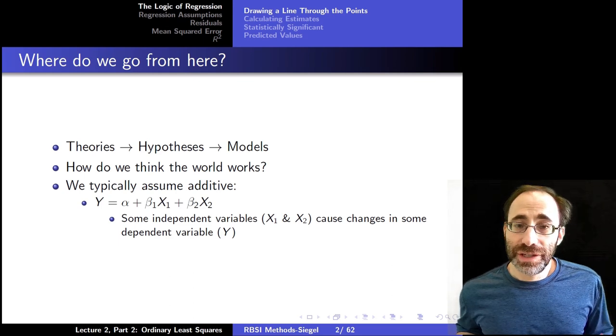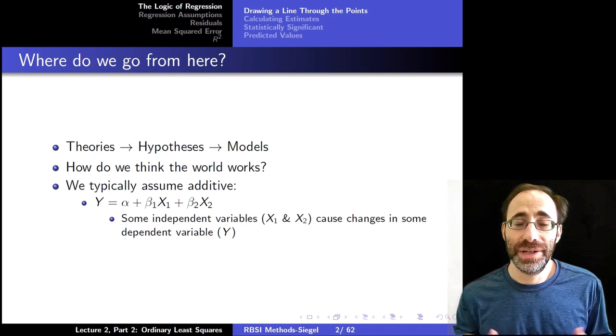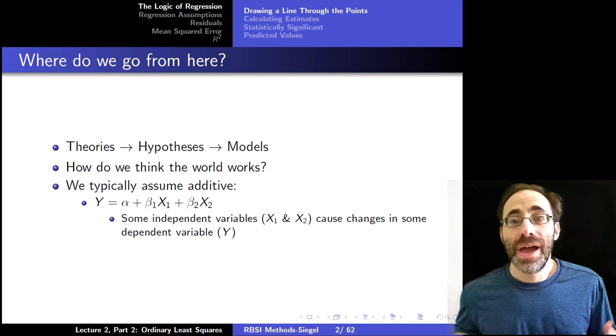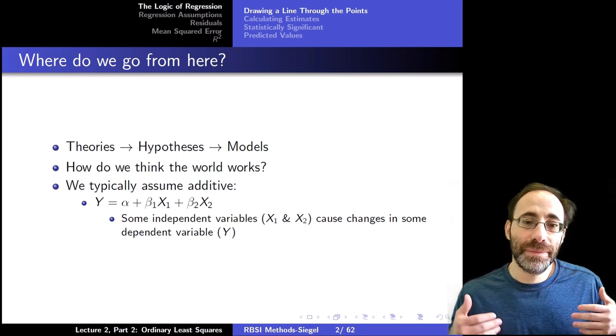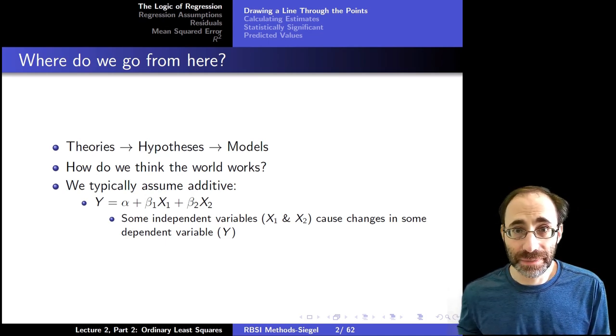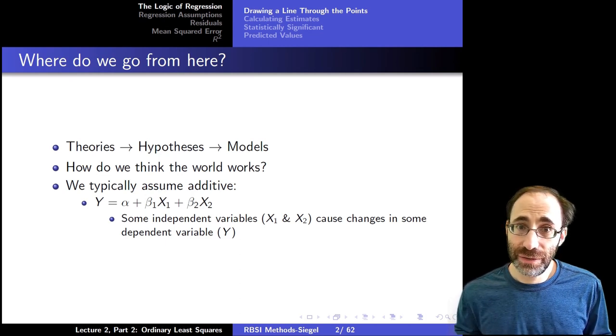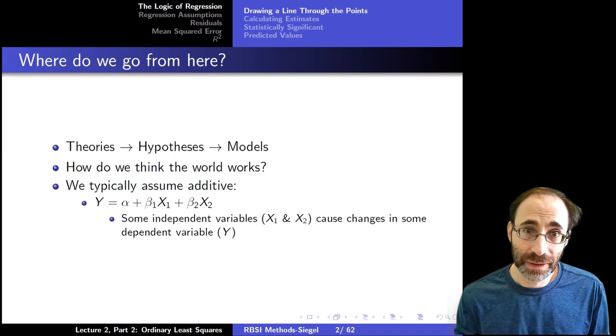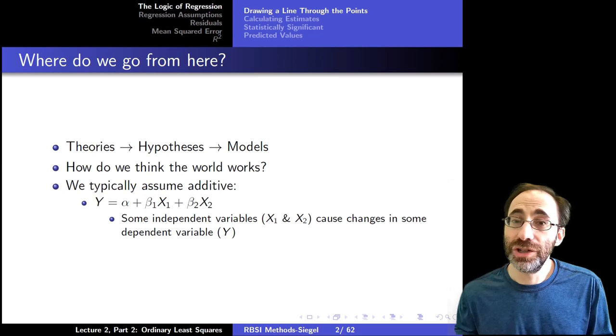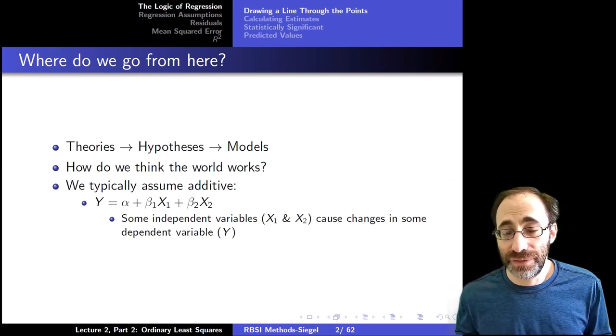So far in the course we've discussed theory generation, how to develop theories which are broad statements about causal relationships in the world, and hypotheses which are particular implications of our theories that are falsifiable with empirical testing. The goal is to reject the null hypothesis associated with every research hypothesis we draw from our theory. The more we can reject null hypotheses, the more support we have for our theories.